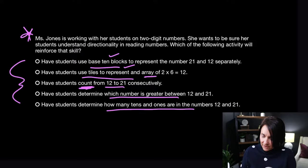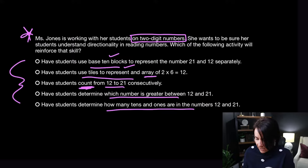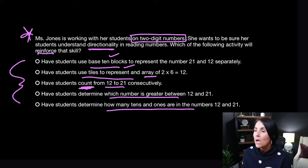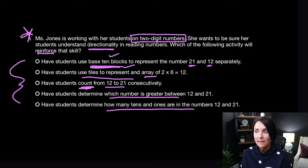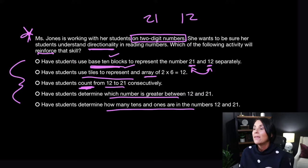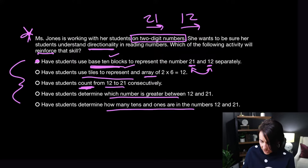Let's go ahead and read the question so I understand exactly what's going on. Ms. Jones is working with her students on two-digit numbers — that's important information. She wants to be sure her students understand directionality — another important word — in reading numbers. Which of the following activities will reinforce that skill? So it looks like I only have to choose one correct answer here, which is a blessing. Normally you have to choose two or three, so it's much easier when you just have one. I like answer A because notice the difference in directionality: 21 and 12 have the same digits but read differently left to right.